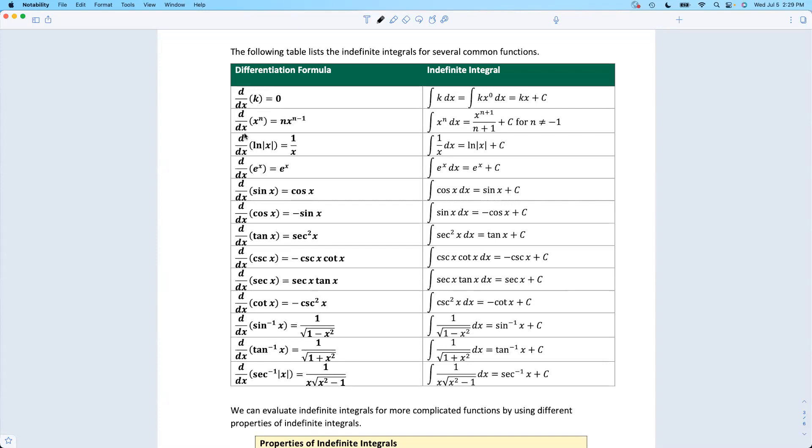So we know, for example, the derivative of e to the x is e to the x. The derivative of sine of x is cosine of x. Derivative of cosine is negative sine. Power rule here. Derivative of a constant is zero.